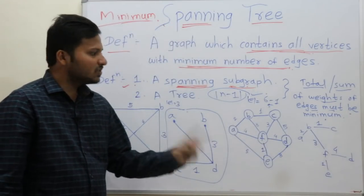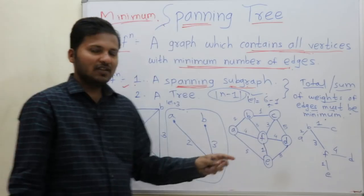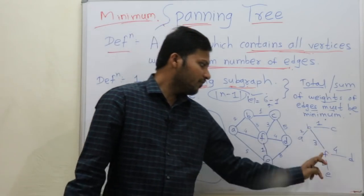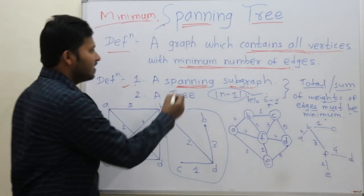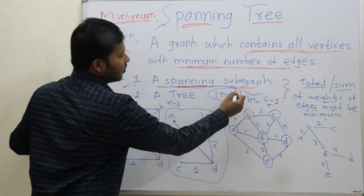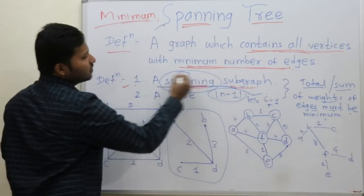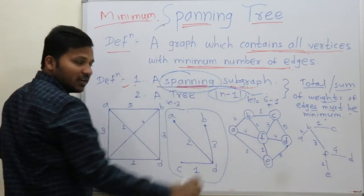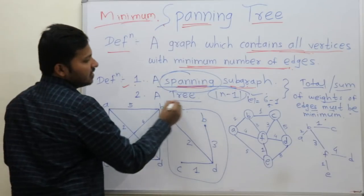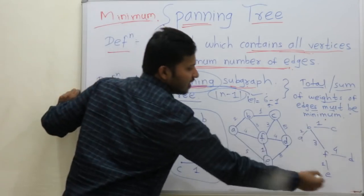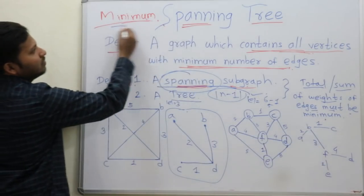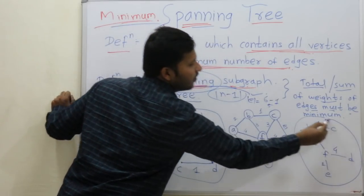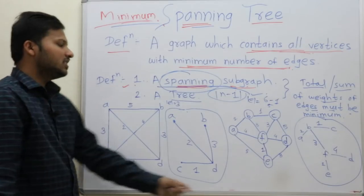So obviously 6 vertices must be finished: 1, 2, 3, 4, 5, 6 — all vertices have been accommodated. So spanning means it has to accommodate all vertices, a tree means it should be connected, and a minimum spanning tree means the weights should be minimum.